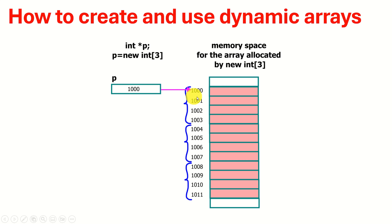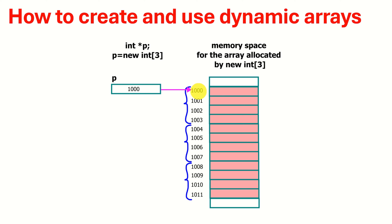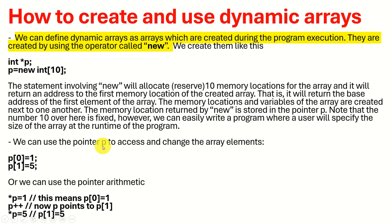Once we execute new int[3], the address of the first element of the array is stored in p. Now p points to this first entry, and we can see three entries: first, second, and third. Note that every entry occupies 4 bytes, because integers occupy 4 bytes. This sketch is very important, so spend some time studying it.